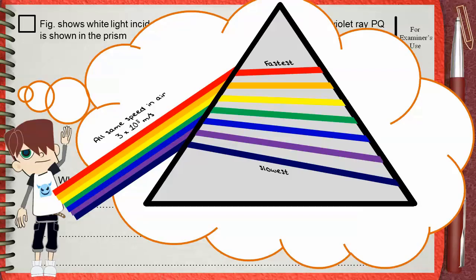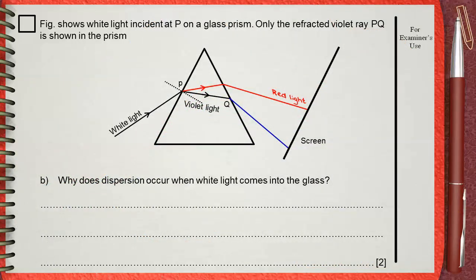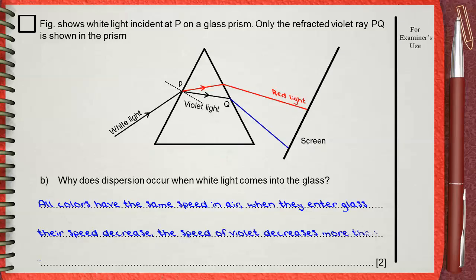This difference in speed inside the glass causes different refraction. This different refraction of each color alone is named dispersion of light. So we can say all colors have the same speed in air. When they enter glass, their speed decreases. The speed of violet decreases more than the decrease in red speed. So violet refracts and breaks more than the red.